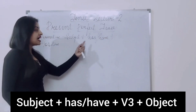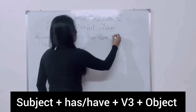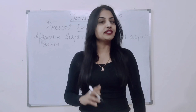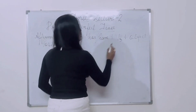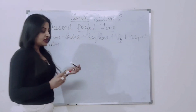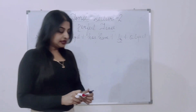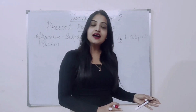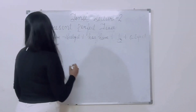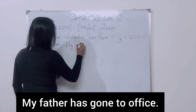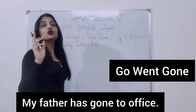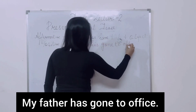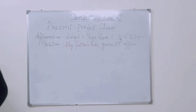The affirmative (positive) structure is: Subject + has / have + V3 + Object. In perfect tenses — whether present perfect, past perfect, or future perfect — we always use the third form of the verb, that is the past participle (V3). For example: पापा office जा चुके हैं — My father has gone to office.